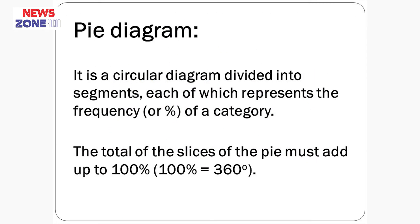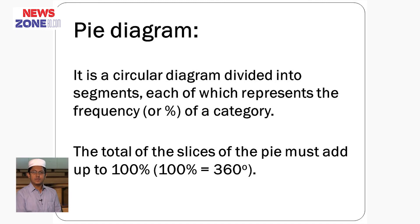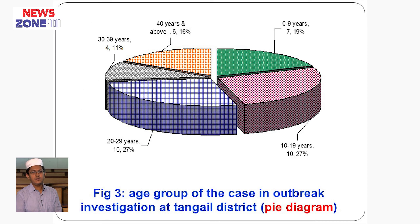Let us discuss about the pi diagram. A pi diagram is a circular diagram divided into segments, each of which represents the frequency or percentage of a category. The total of all slices of the pi must add up to 100 percent — that is, 360 degrees equals 100 percent. Here we see the circle is divided into different segments, each section representing different components patterned with different colors, and the angles at the center of each component represent the intensity or frequency of that component.